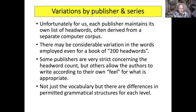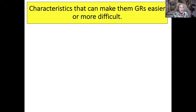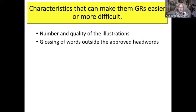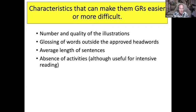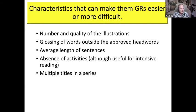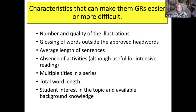Not just vocabulary — there are differences in permitted grammatical structures for each level as well. There are other characteristics not measured by headwords, such as the number and quality of illustrations, glossing of words outside the approved headwords, average length of sentences, and absence of activities — which are useful for intensive reading but get in the way for extensive reading. Multiple titles in a series make books easier because students encounter the same vocabulary, syntax, and characters. The total word length, student interest in the topic, and available background knowledge also matter — the more they know about a topic, the easier the book is.